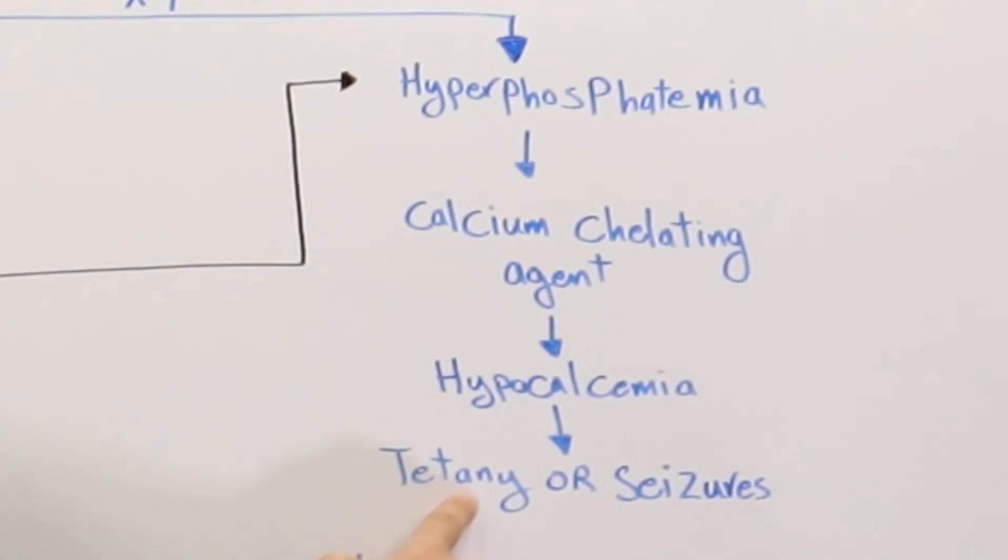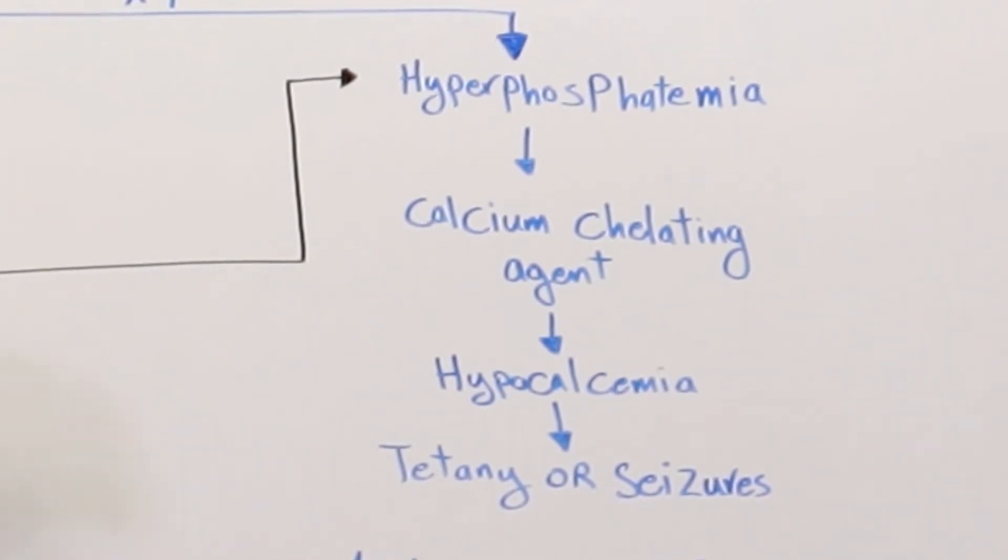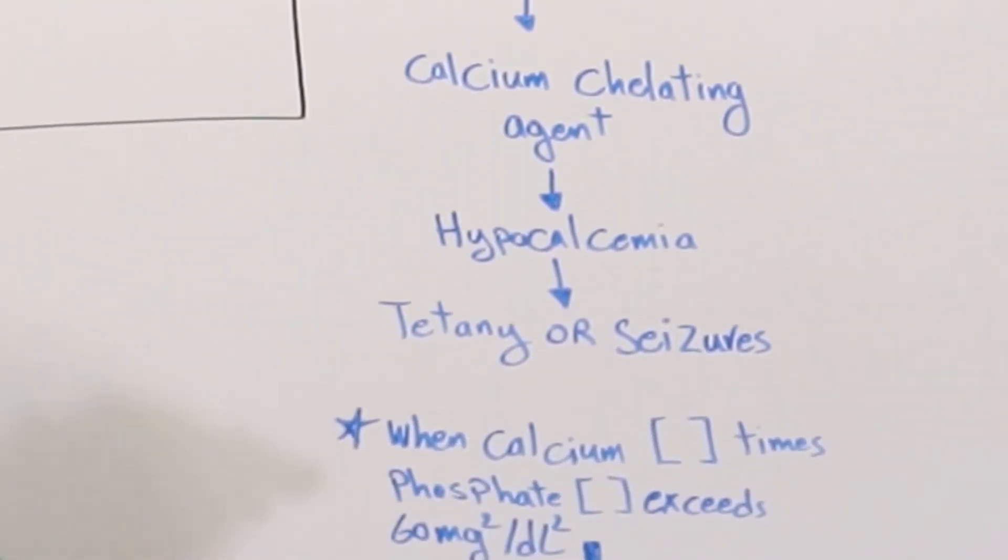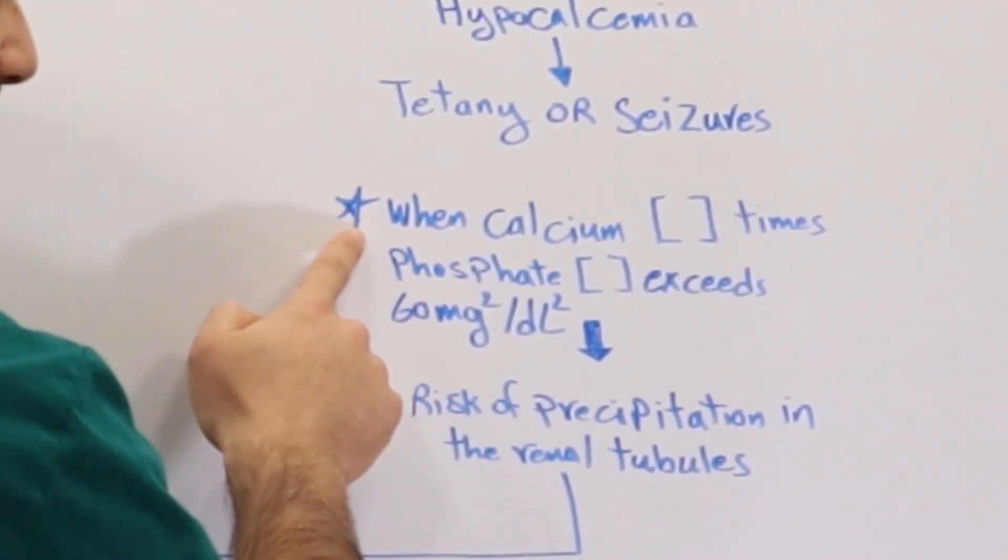Tetany is basically intermittent muscular spasm. That's what tetany is. When calcium, something to keep in mind.